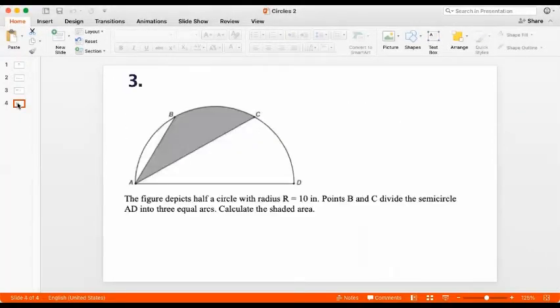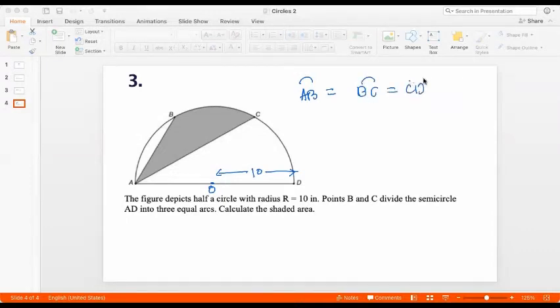Let's go to question 3. The figure depicts half a circle with radius R is equal to 10 inches. So this is like a semicircle with AD as the diameter. So let's quickly draw the center O here. And the radius OD and OA is 10 inches. Points B and C divide the semicircle into three equal arcs, right? What is the area of the shaded portion? So basically, they're saying that arc AB is equal to arc BC is equal to arc CD.